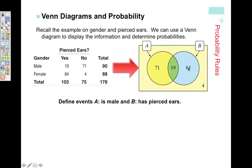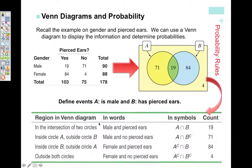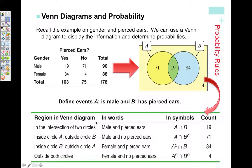Here's some notations. In the intersection of the circle, male and pierced ears, A intersect B, there's 19. Inside A, outside B: male and no pierced ears, A intersect B complement. Inside B, outside A: that would be female and pierced ears, or not male and pierced ears, A complement intersect B, 84. Outside both circles would be female and not pierced ears, or not male, not pierced ears, A complement intersect B complement, there's 4.